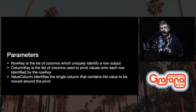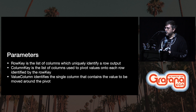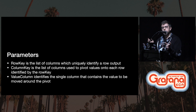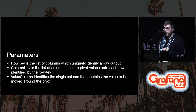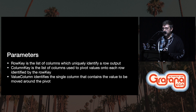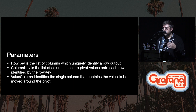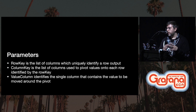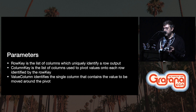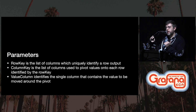The row key is the list of columns which uniquely identify a row in the output — each unique combination of those row keys becomes its own row. The column key is the list of columns used to pivot values onto each row identified by the row key, where each value in the column key actually becomes a unique column itself. Finally, the value column is the parameter that identifies a single column containing the value to be moved around the pivot — this is the data that actually gets translated from row format into column format or vice versa.